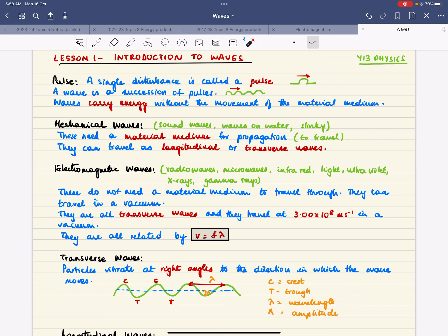Waves can travel either as longitudinal or transverse waves. Electromagnetic waves are those like radio waves, microwaves, infrared light, ultraviolet, x-rays and gamma rays. These do not need a material medium to travel through. They can travel in a vacuum.